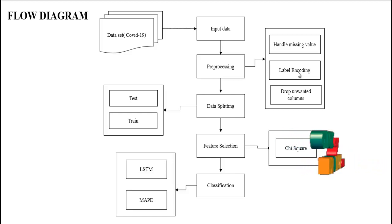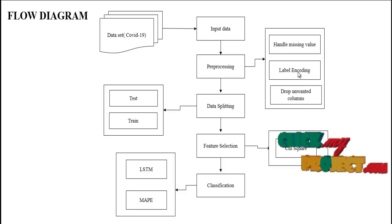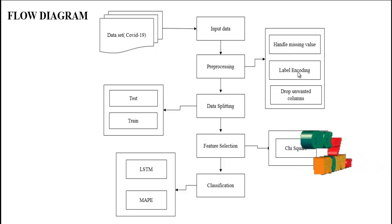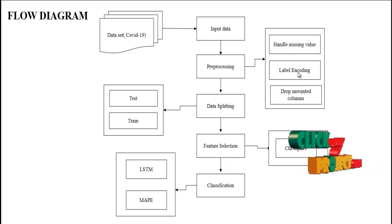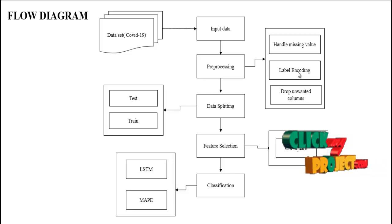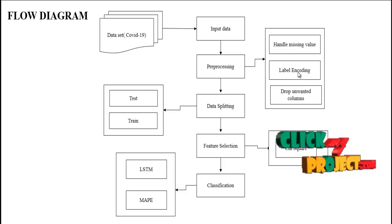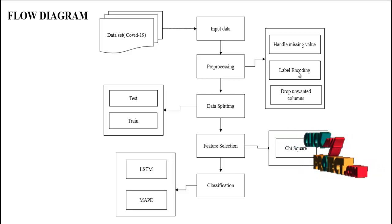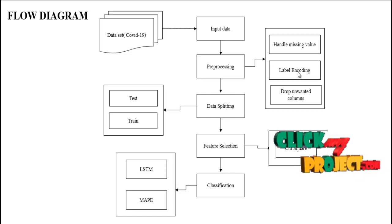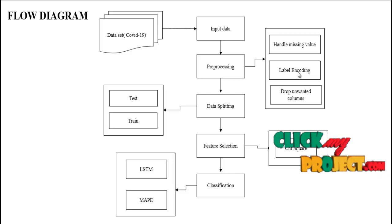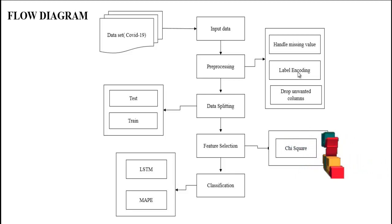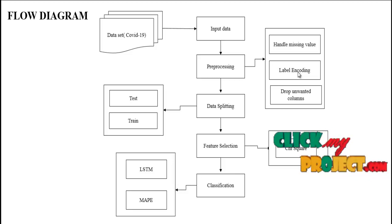We drop unwanted columns because they consume memory space. Then we implement data splitting, which is the major part of the data mining concept. Data splitting is the act of partitioning the input data into test and train sets. The test set is used for predicting the model and the train set is used for evaluating the model. Data splitting is done on a ratio basis — the test set contains 30% and the train set contains the remaining 70%.